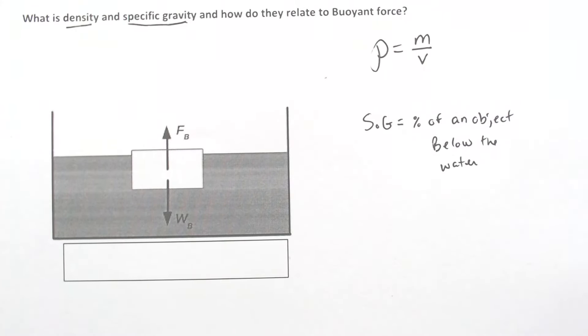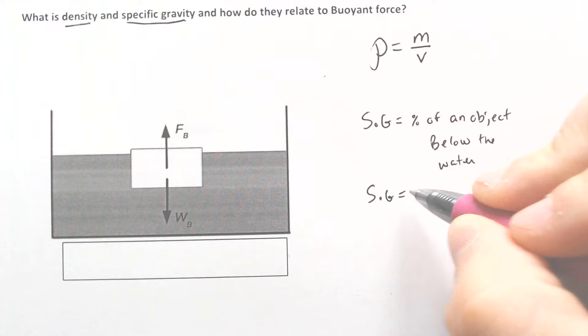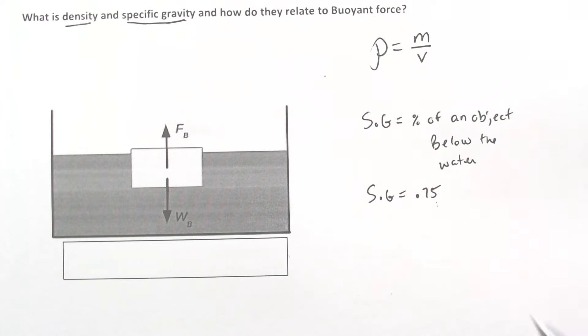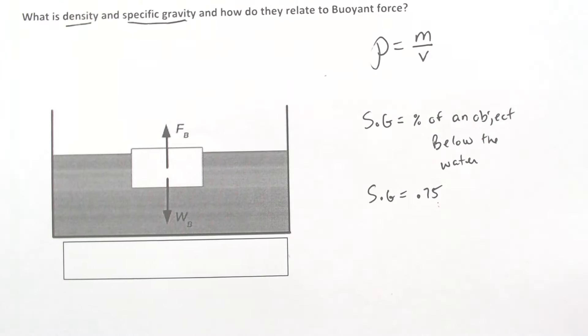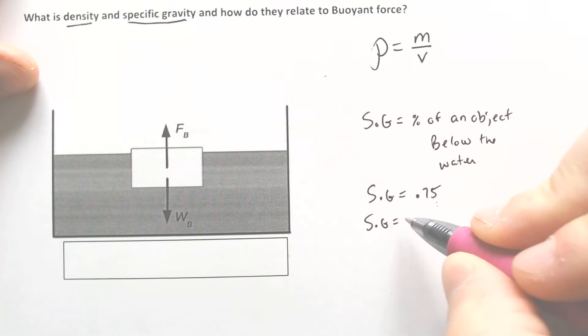That means that if you have a specific gravity that is a decimal, let's say it equals 0.75, that means that 75% is going to be below the water.